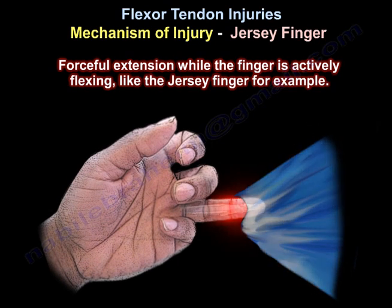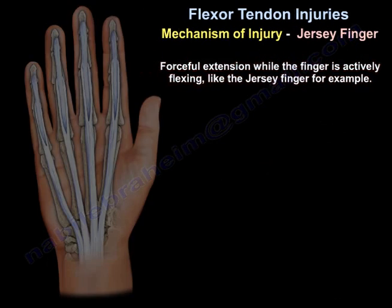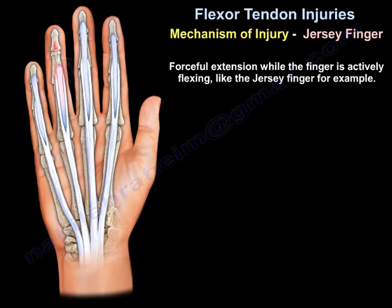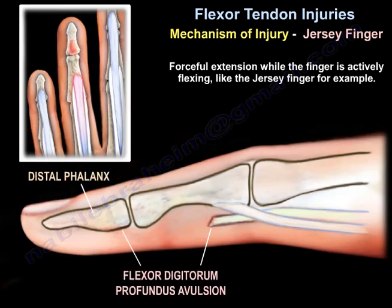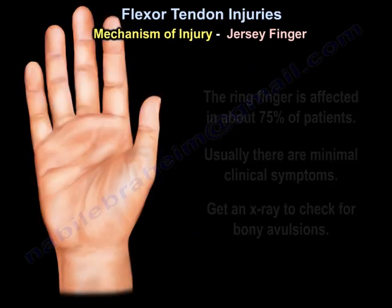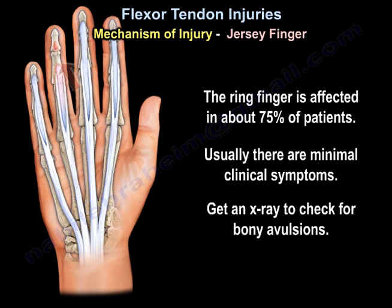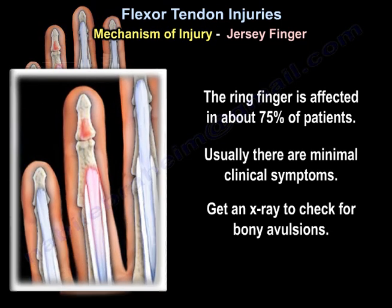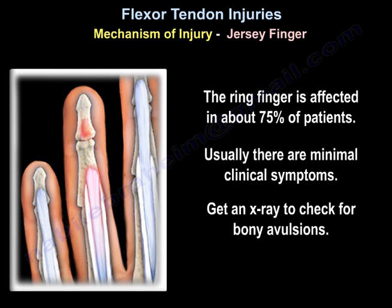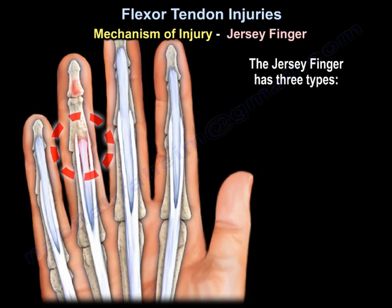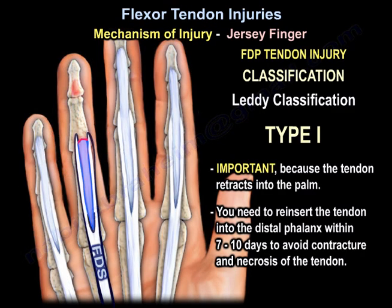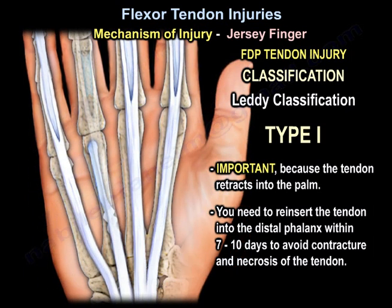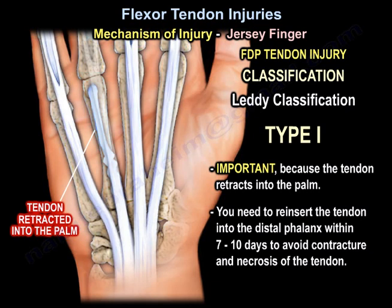Another mechanism of injury is forceful extension while the finger is actively flexing — like the jersey finger, for example. In the jersey finger, 75% involve the ring finger. There are usually minimal clinical symptoms; get an x-ray to check for bony avulsions. The jersey finger has three types. Type 1 is important because the tendon retracts into the palm, and you need to reinsert it into the distal phalanx within 7 to 10 days to avoid contracture and necrosis.